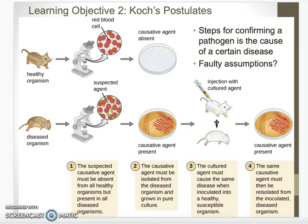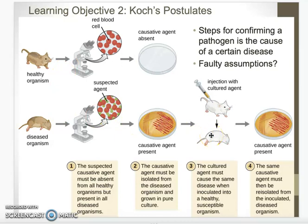Third: that microbe that you've just grown can cause the disease when it's introduced into a healthy organism — so it causes the disease to show up in an organism that was healthy before being exposed to that pathogen. And then fourth: you can isolate it again from the new host. So you're showing that it's in the diseased organisms, not healthy ones; you can isolate it; it can cause the disease when something is exposed to it; and then you isolate and find that microbe again.